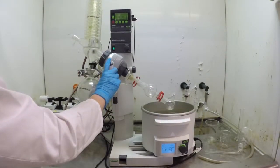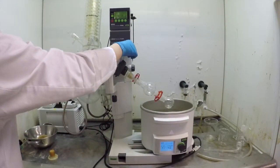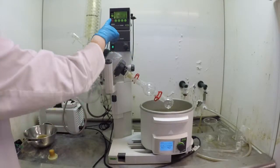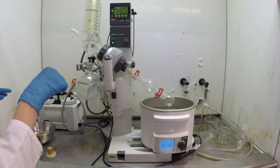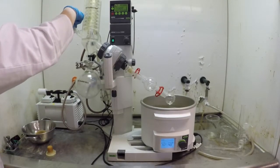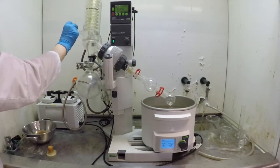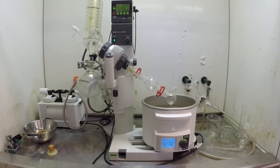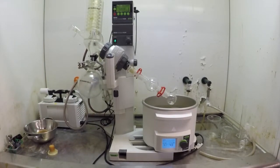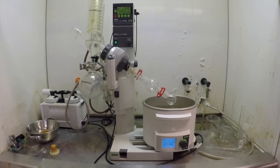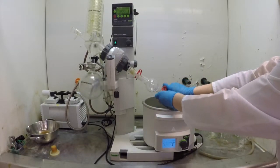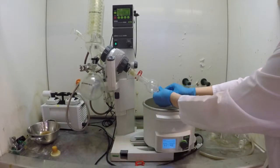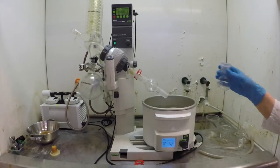Lift the flask out of the water bath. Turn off the rotation. Press the stop button. This will increase some of the pressure in the system via the pump. Open the system to release the rest of the pressure. Remove the clamp and the flask from the rotavapor. Stop the cooling system by turning off the tap.